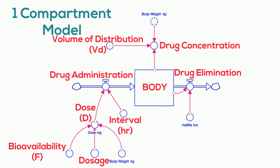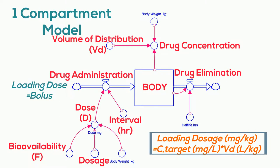The volume of distribution can also be normalized to body weight. For the purposes of a one-compartment model, we assume that a drug distributes outside of the circulation almost immediately. So volume of distribution is an important variable to understand for a loading dose, which is a drug dose you might give to rapidly target a specific drug concentration, such as with an antimicrobial when treating a serious sepsis. For an IV dose, the weight-normalized loading dose in mg/kg would be the product of the target concentration in mg/L times the body weight-normalized volume of distribution in liters per kg.